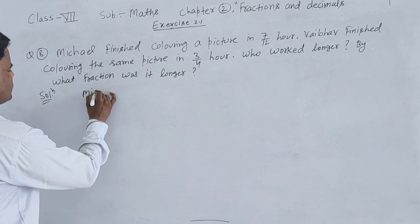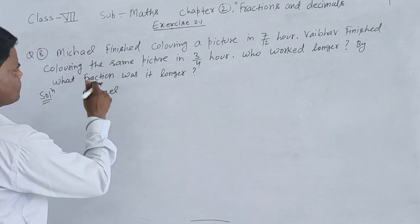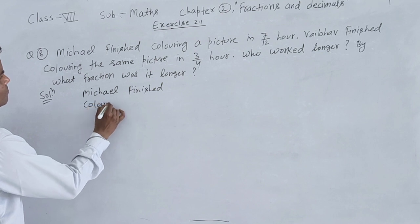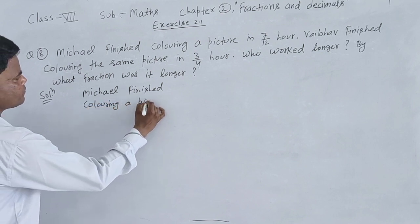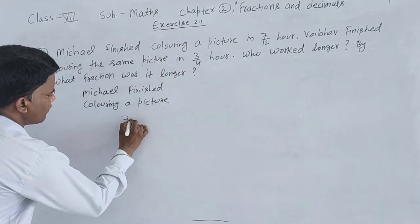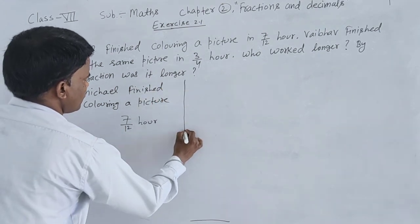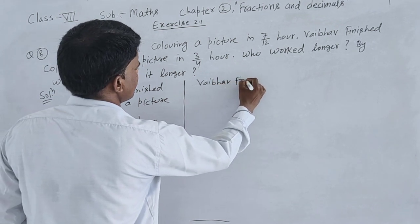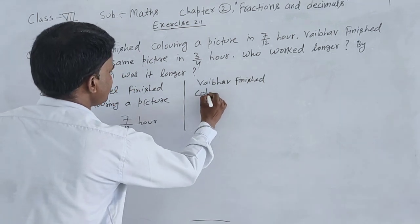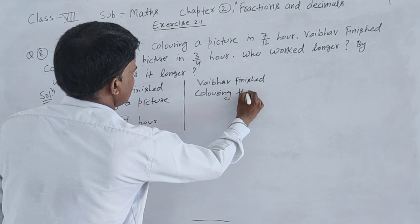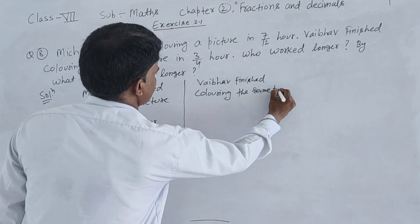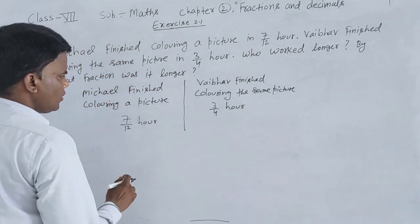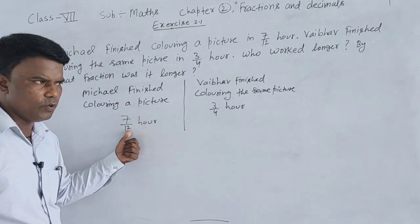So the solution: Michael finished coloring the same picture in 7/12 hours. Vaibhav finished coloring the same picture in 3/4 hours. We need to compare these fractions.